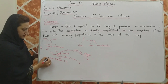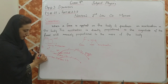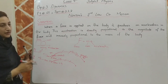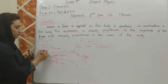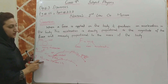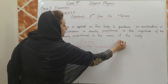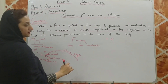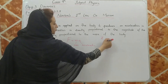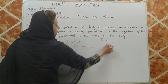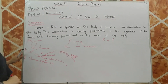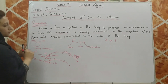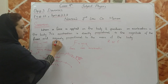In the first case the force was greater and acceleration was also greater; in the second case the force was less and the acceleration produced was also less. Both quantities increase or decrease simultaneously, which shows a direct relation. This can be written as: acceleration is directly proportional to the magnitude of force.